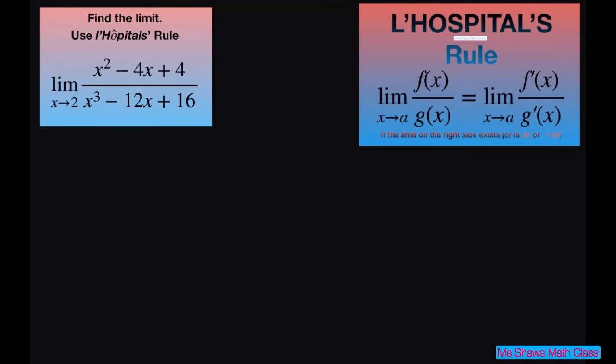Now before we start, let's just see what happens if you plug in 2. You're going to get 2 squared minus 4 times 2 plus 4. This is going to equal 0. And the denominator is going to be 2 cubed minus 12 times 2 plus 16. That also equals 0.